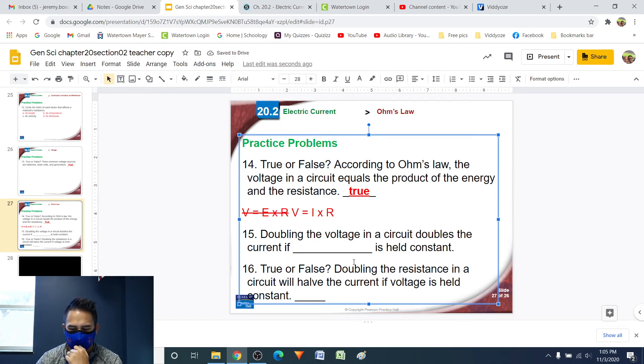Number 15, doubling the voltage in a circuit doubles the current if blank is held constant. So if you double the voltage in a circuit, that means you're increasing the amount of force that's pushing on the charges. You will double your current, meaning that they're going to be traveling faster. So you're going to have more of them going through the wire at a given time, as long as your resistance is held constant. Remember that resistance is how much friction there is. So if you double your voltage and your resistance doesn't change, then yes, your current is going to go up too. But if you double your voltage and you also increase the resistance, then essentially you're just going to cancel out that voltage you just doubled because the resistance is going to slow things down again. And then your current will essentially not change. So for this one, we are looking for resistance. Doubling the voltage in a circuit will double the current if the resistance is held constant.